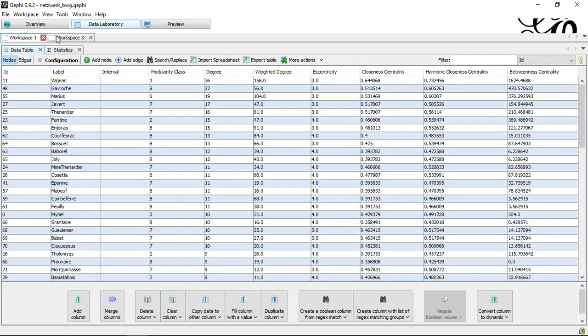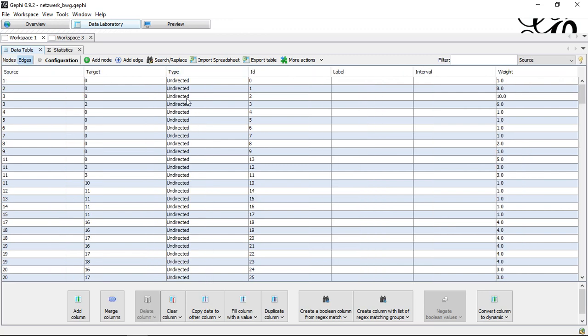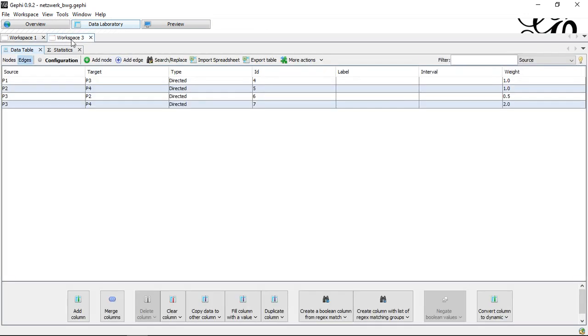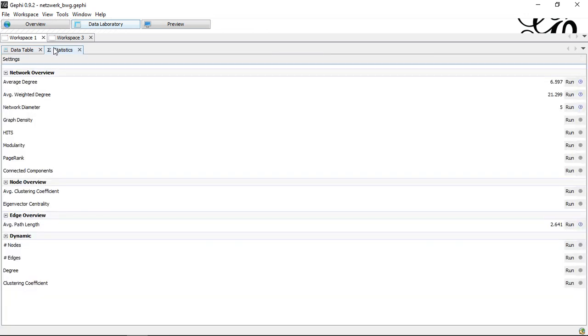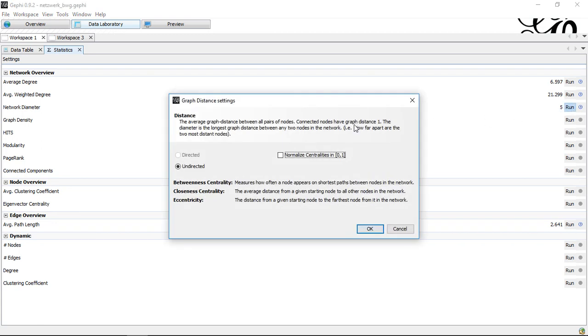Here with Gephi, I have prepared two examples: one example for a larger undirected network and a second example for a smaller directed network. If I start with the undirected network, we can go to the statistics menu. In the third section, if you've listened to the part on betweenness, you've already seen this. If we click on run,